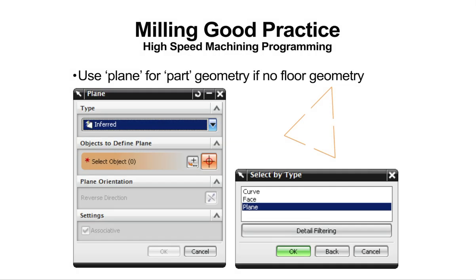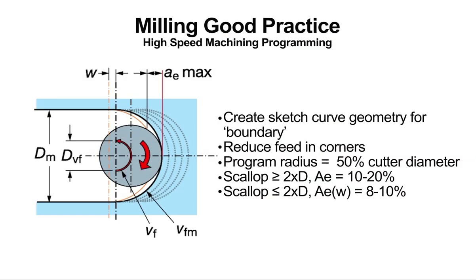To create a trochoidal milling toolpath, it is first recommended that the part geometry be specified as a plane created in modeling mode. This plane will act as the floor boundary for the tool. Next, create geometry to drive the tool in a unidirectional slicing pattern. Follow the programming guidelines for features that are less than two times the cutter diameter wide, as well as for those features greater than two times the cutter diameter wide.